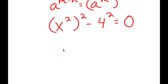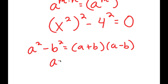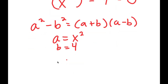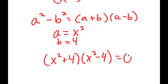Now, if I have something in the form a squared minus b squared, this is equal to a plus b times a minus b. In this case, a is x squared and b is 4, so I get x squared plus 4 times x squared minus 4 is equal to 0.